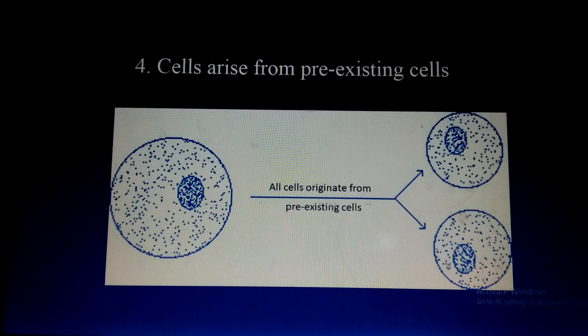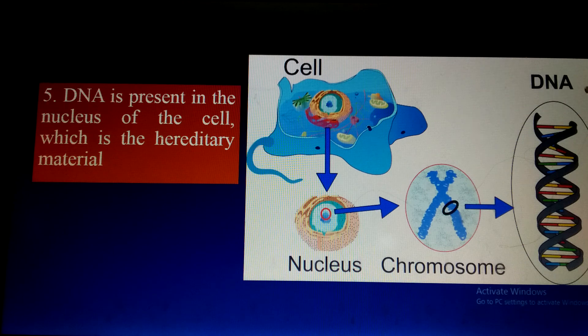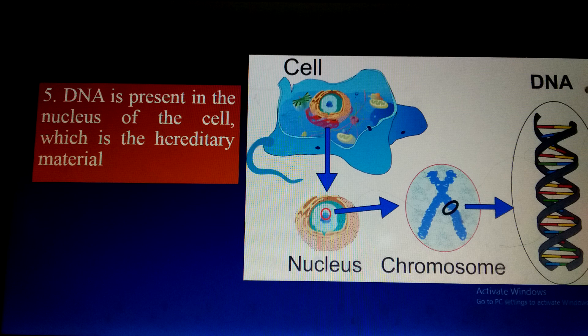Now, DNA is the hereditary material present inside the nucleus of the cell. Inside the cell there is a nucleus, inside the nucleus there are chromosomes, and chromosomes are made up of DNA and protein. DNA — deoxyribonucleic acid — is the genetic material responsible for the transmission of characters from parents to their offspring. DNA is the main controlling macromolecule; it is a polymer of nucleotides — polynucleotide chains — present inside the nucleus that controls all activities and heredity.